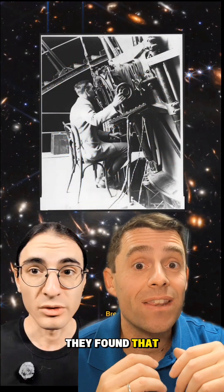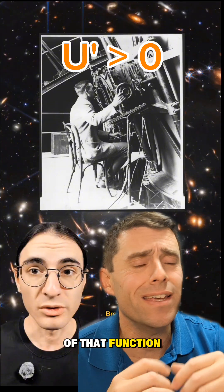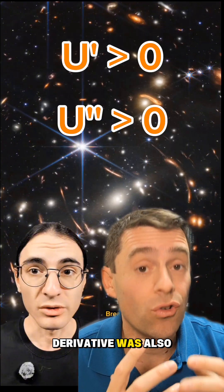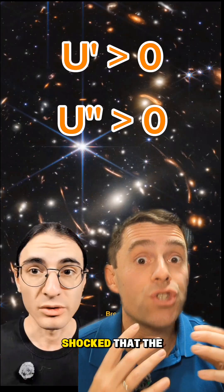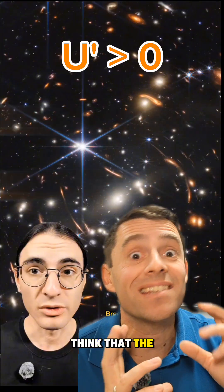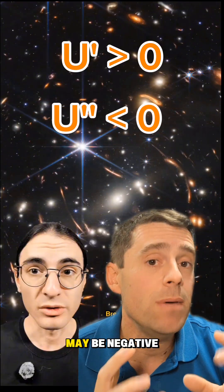Long ago, they found that the first derivative of that function is positive. Then they thought that the second derivative was also positive. Then they were shocked that the third derivative could be negative. And now they think that the second derivative itself may be negative.